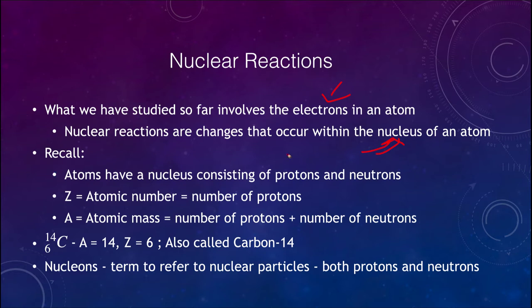Now as a review, remember that atoms have a nucleus which consists of protons and neutrons. We use Z as the atomic number for the number of protons, and A as the atomic mass, which is the number of protons plus the number of neutrons. When we write a symbol, for example, for carbon-14 here, we have the superscript of 14 referring to the atomic mass, the subscript of six referring to the atomic number, and then the symbol C same as the chemical symbol that we use for carbon. And this would of course be called carbon-14.